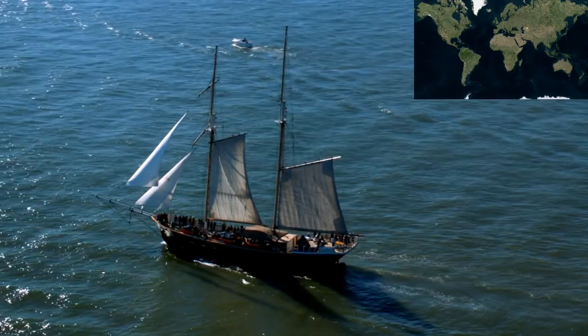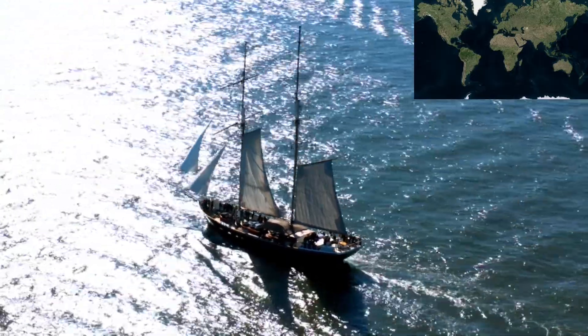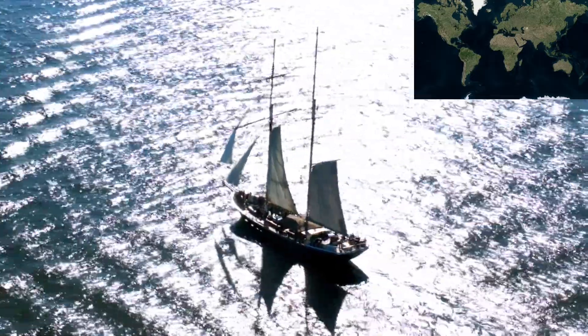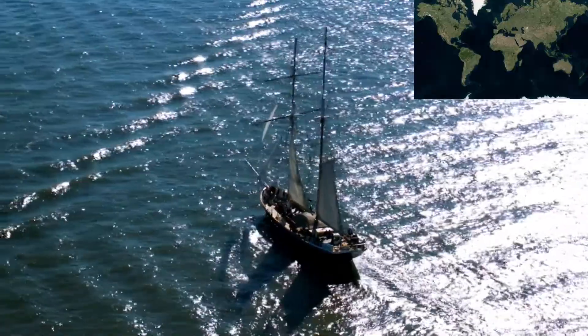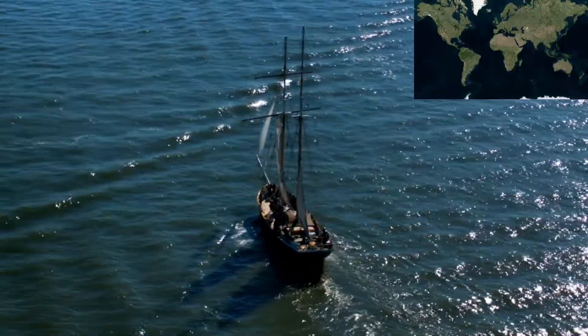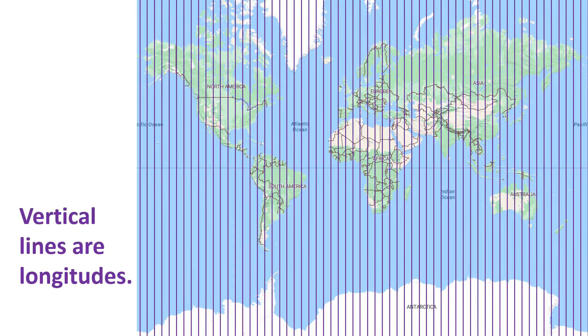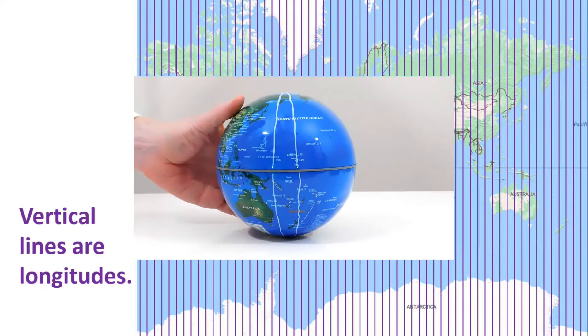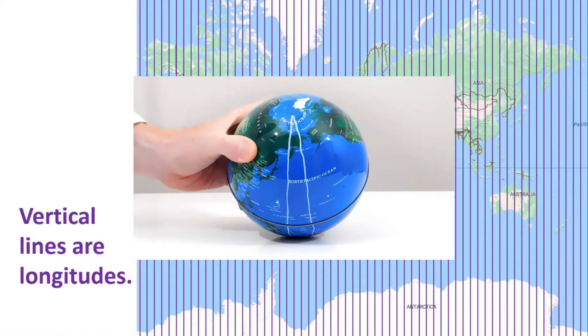This rectangular map without cuts was invented almost 500 years ago and became very popular with sailors. It's still very popular today and is used by many internet websites and apps. To make this map, the map makers made the longitude lines parallel with each other instead of having them come to the same point as they do on a globe.